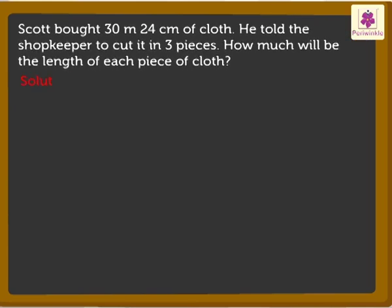Here, we would first be carrying the division of meters and then centimeters. So, let's divide 30 meters, 24 centimeters by 3 to get the answer. So, let's start with 30 meters. Here, as 3 is the divisor, we will use the table of 3. How many times 3 is 30? 10 times 3 is equal to 30. Therefore, we will write 10 as the quotient.